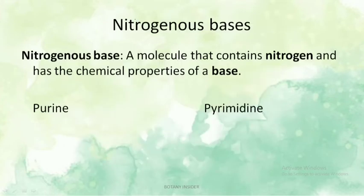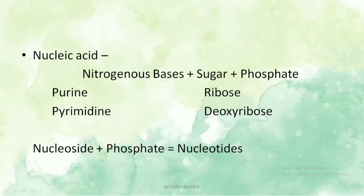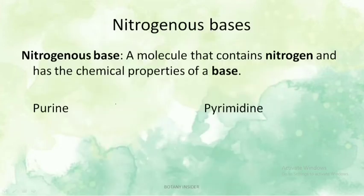Now let's understand the nitrogenous bases. Nucleic acids contain nitrogenous bases, sugars, and phosphates. We've discussed sugars; phosphate is simply the molecule attached to the nucleoside. Nitrogenous bases can be either purines or pyrimidines.